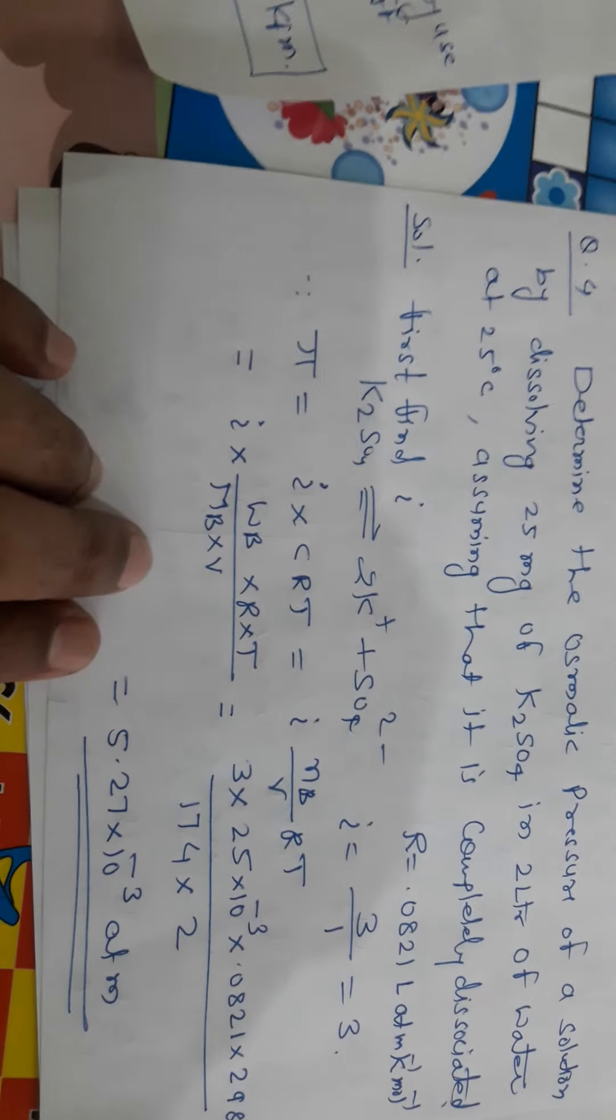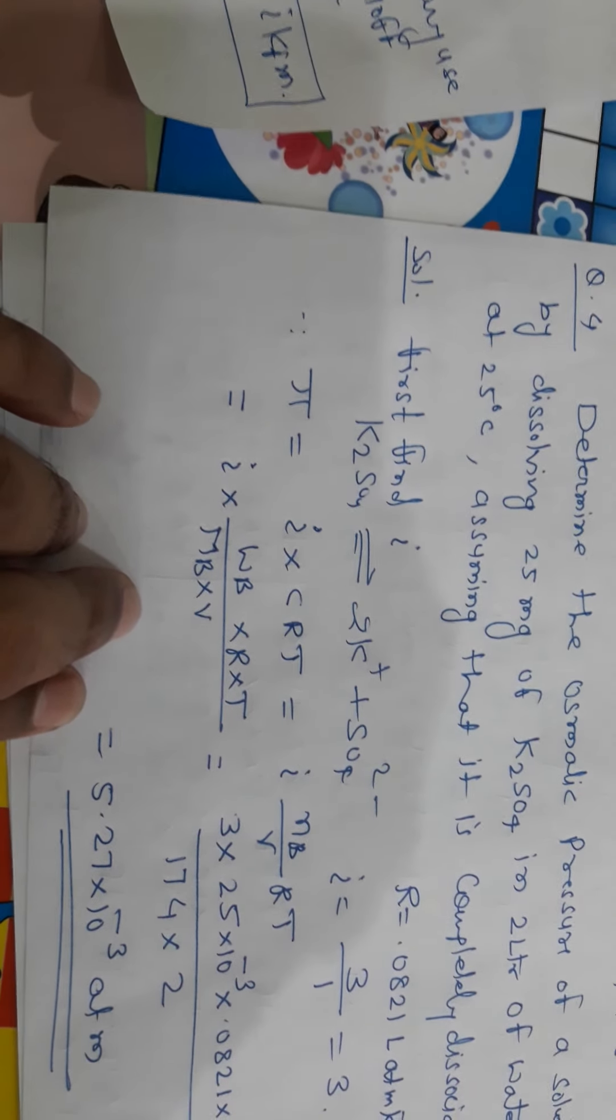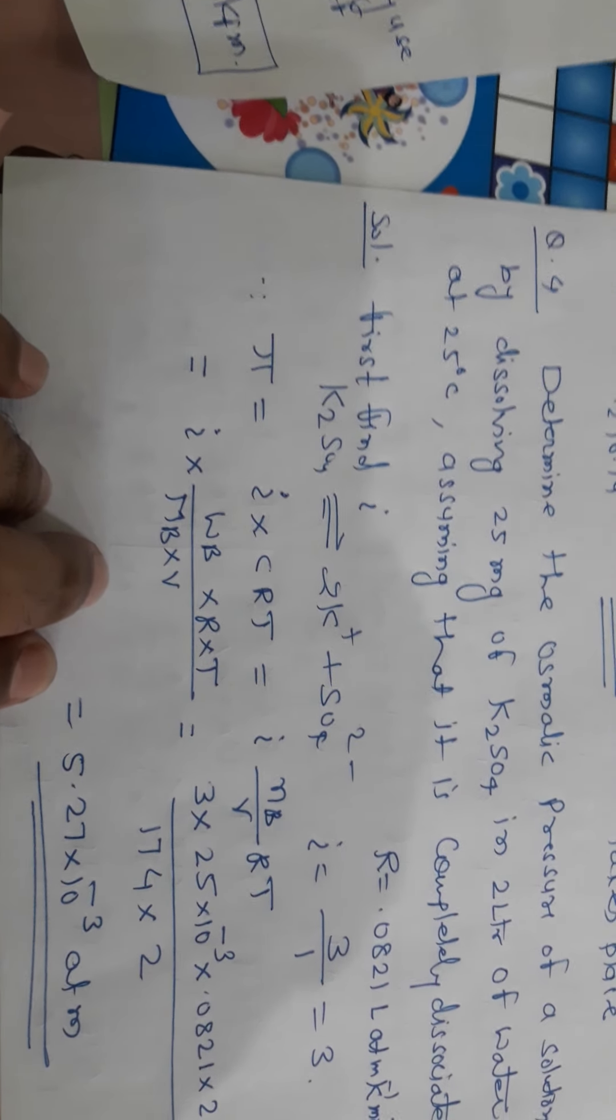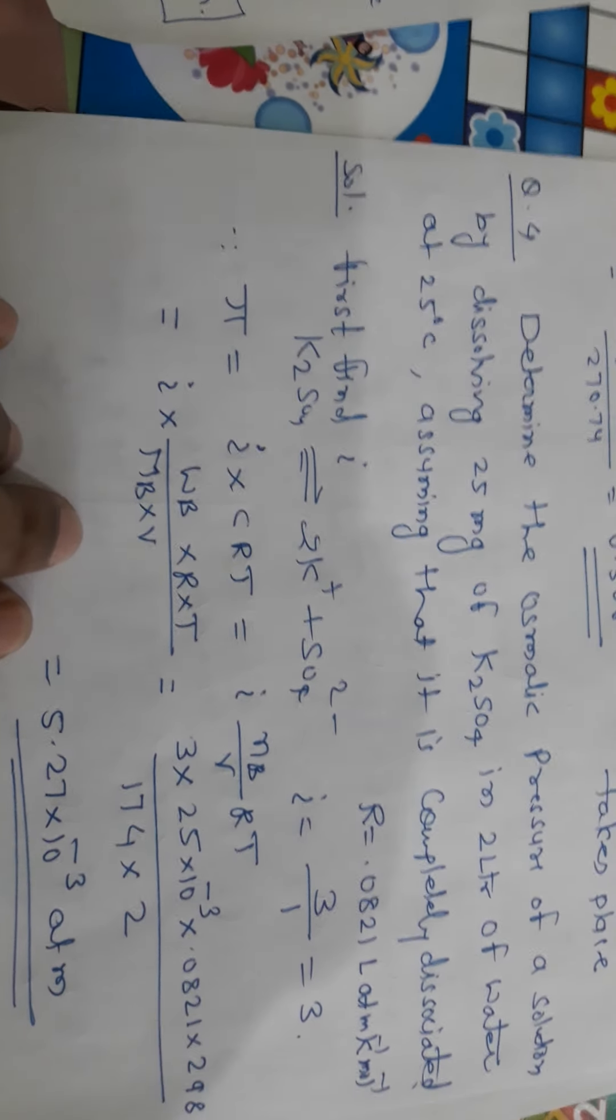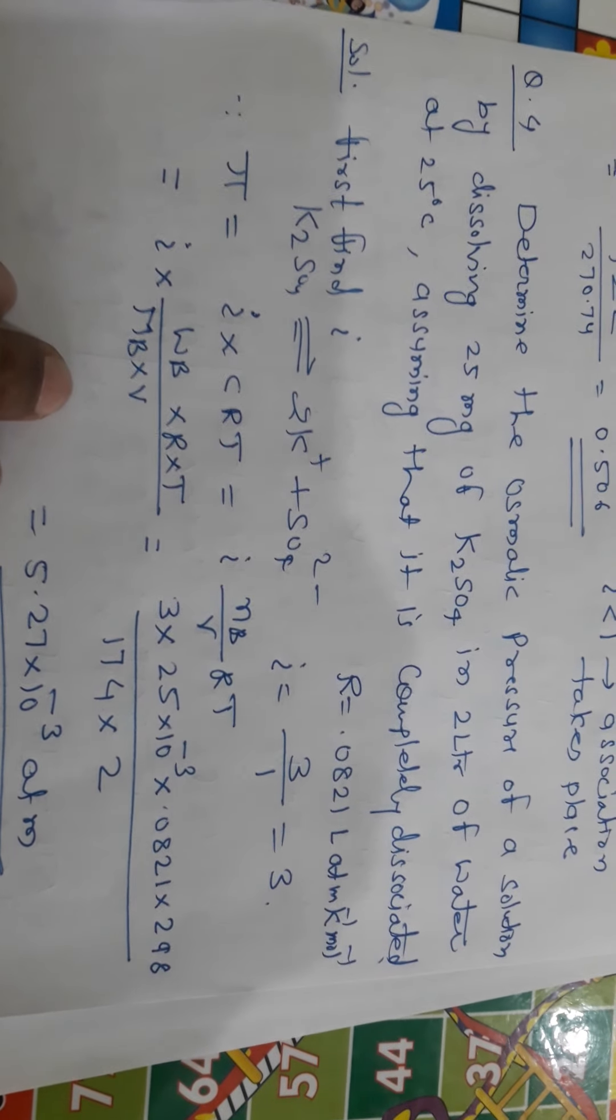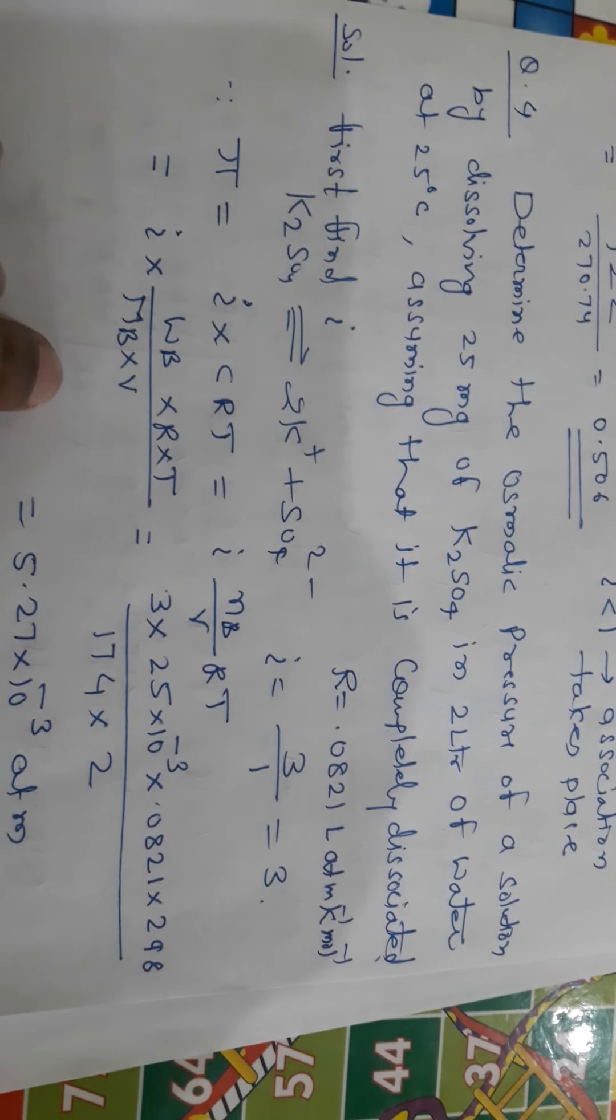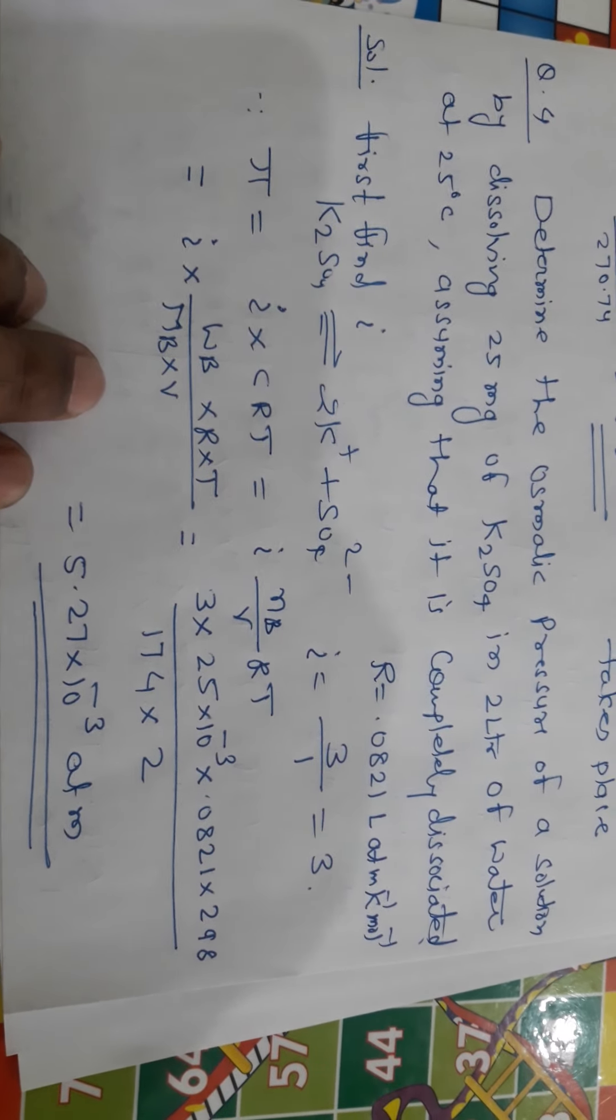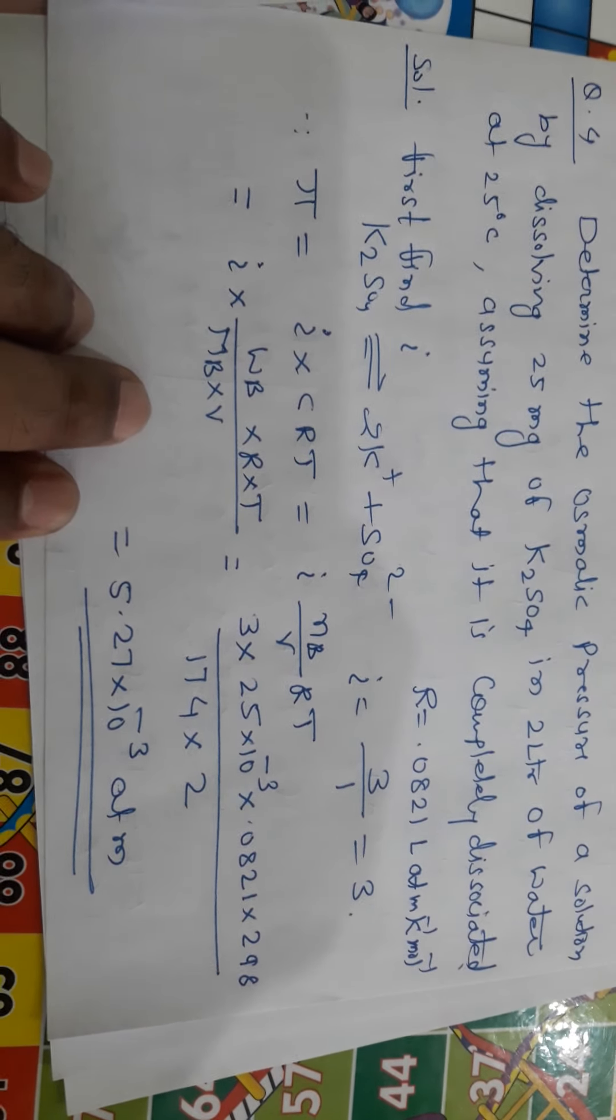Since we know osmotic pressure is equal to I times CRT. C is what? C is the molarity. It can be found out NB upon V. I is equal to 3. NB is number of moles, WB by MB. V volume of the solution. R gas constant. And T is the temperature. By putting all those values, I, we will put 3. WB, it is given 25 into 10 to the power minus 3. R, 0.0821. Temperature, 298 Kelvin upon MB, 174. And volume, 2 liter. The result will be 5.27 into 10 to the power minus 3 atm.